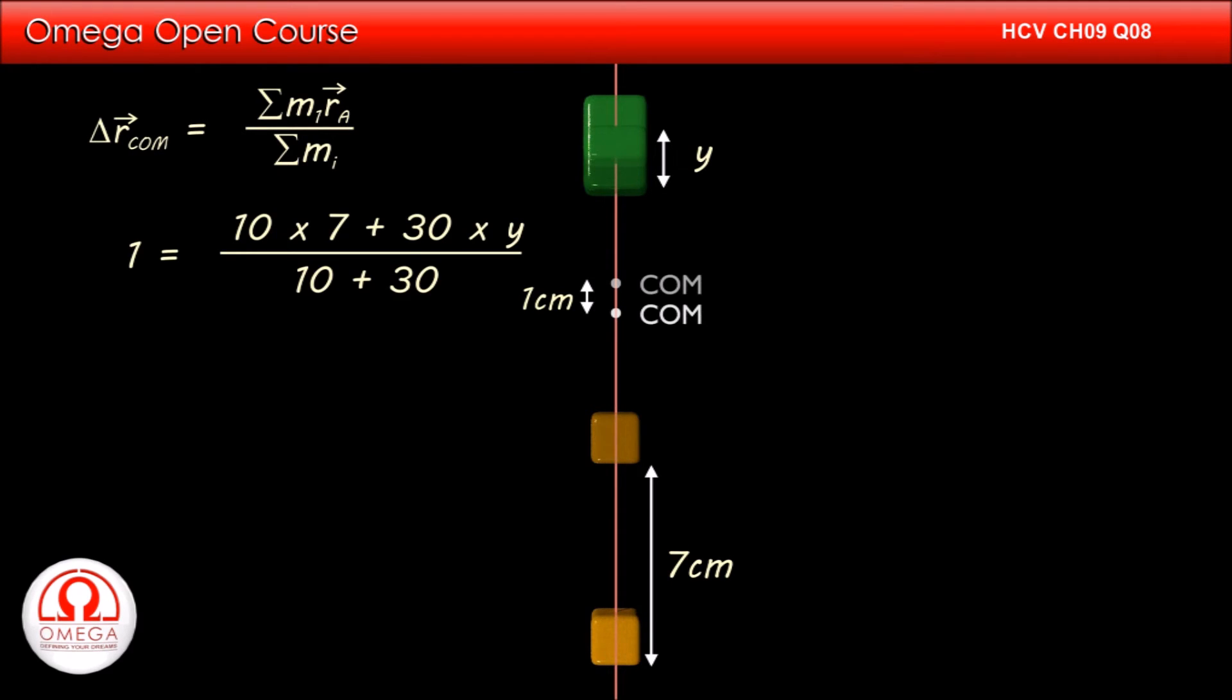Putting the values, we get 1 is equal to 10 into 7 plus 30 into y divided by 10 plus 30. Simplifying, we get 40 is equal to 70 plus 30y, or 30y is equal to minus 30, which implies y is equal to minus 1 cm. This is our answer.